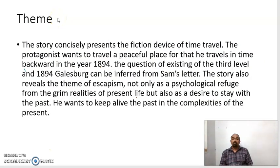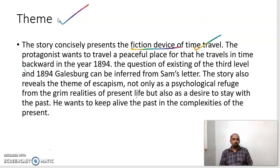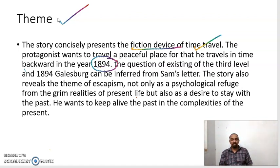Now let us discuss the theme of the story, The Third Level. The story concisely presents the fiction device of time travel. The protagonist wants to travel to a peaceful place. For that, he travels backward in time to the year 1894. This is one of the themes of the story — the protagonist's desire to travel to a peaceful place by going back in time to reach the year 1894.